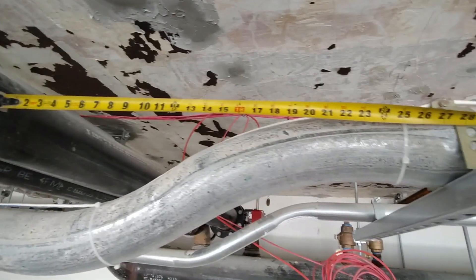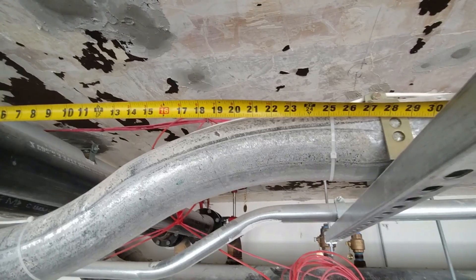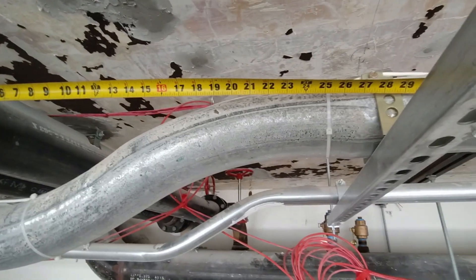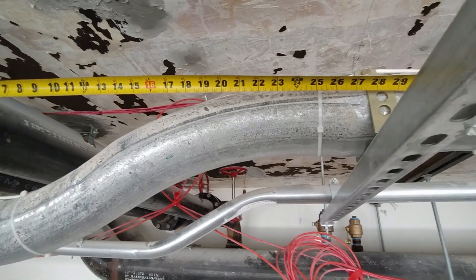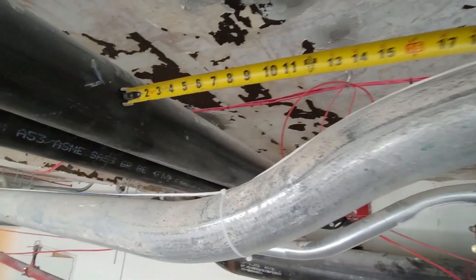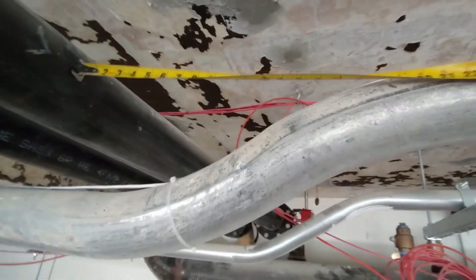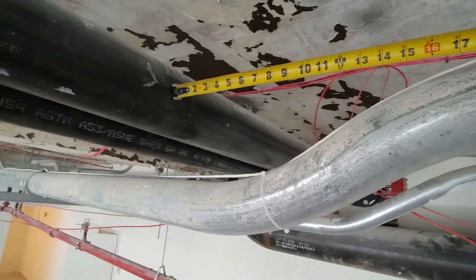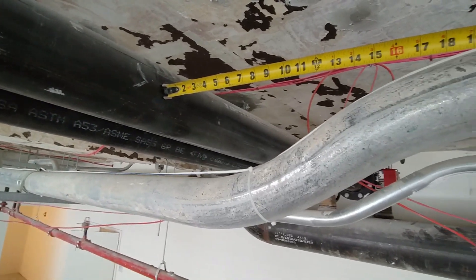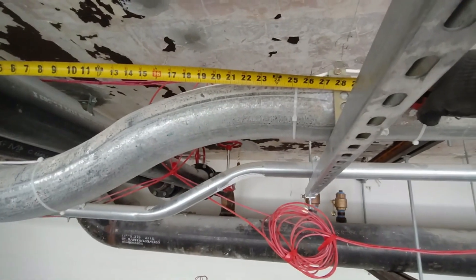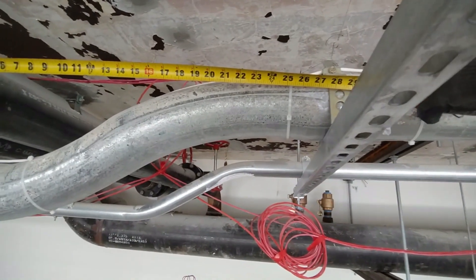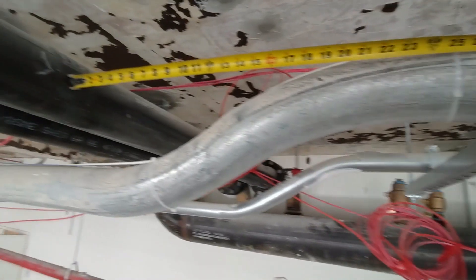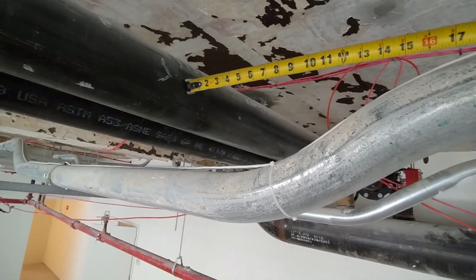For the sake of the video, let's say that we have about a space of about 28-29 inches before we have to go under our obstruction. Basically, we're on top of this Kindorf and all of a sudden our obstruction is right there in front of us. We can't start our bend before our rack, and we have to actually go under this obstruction.